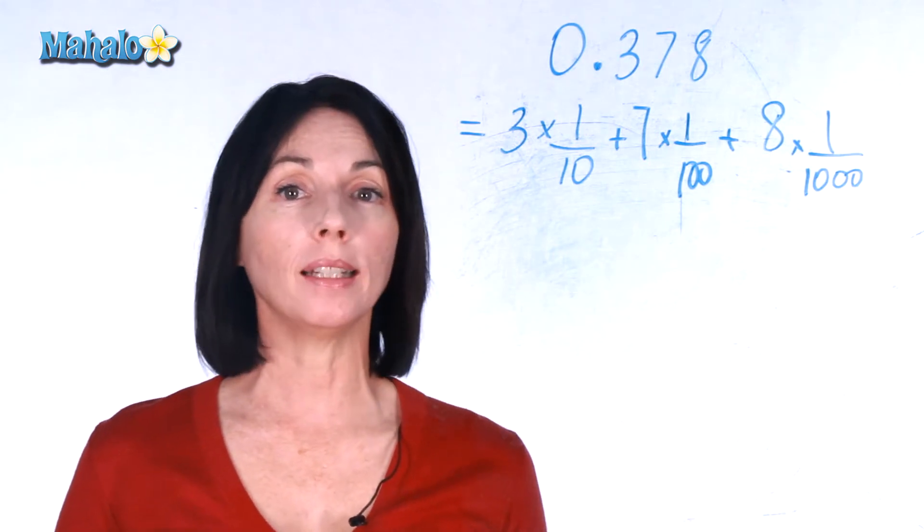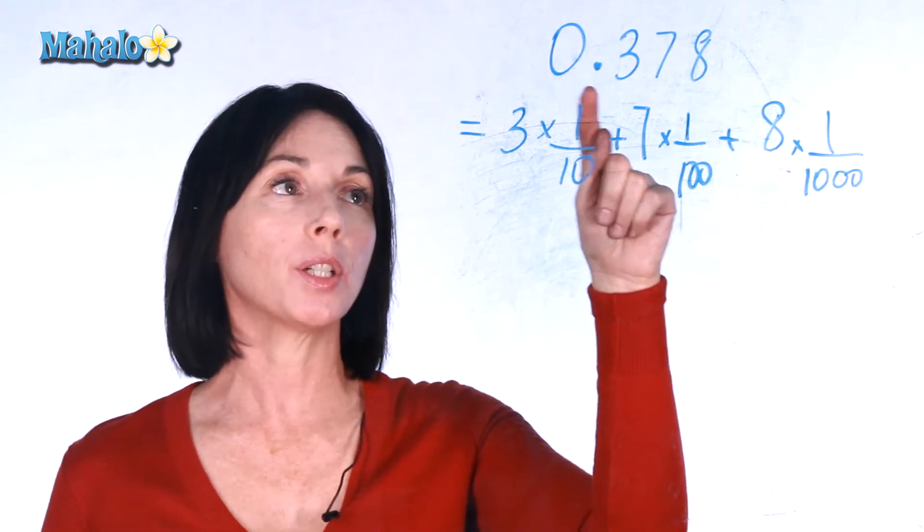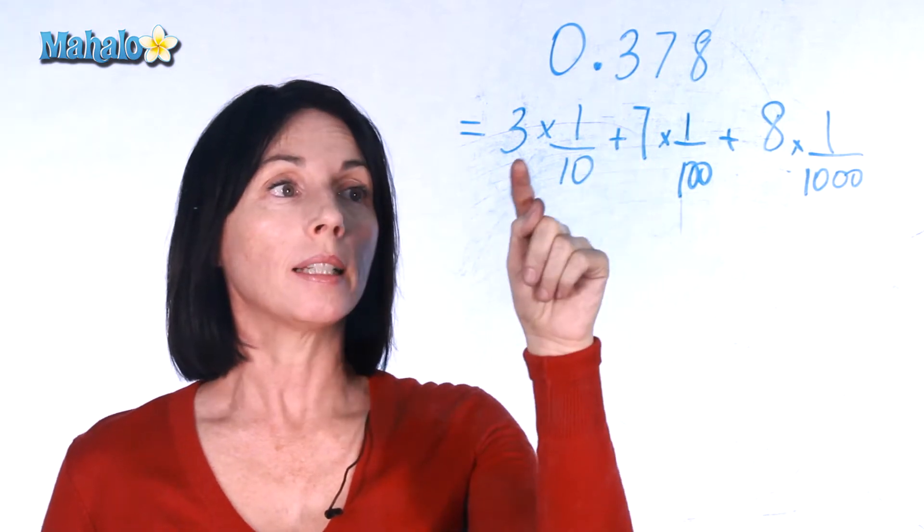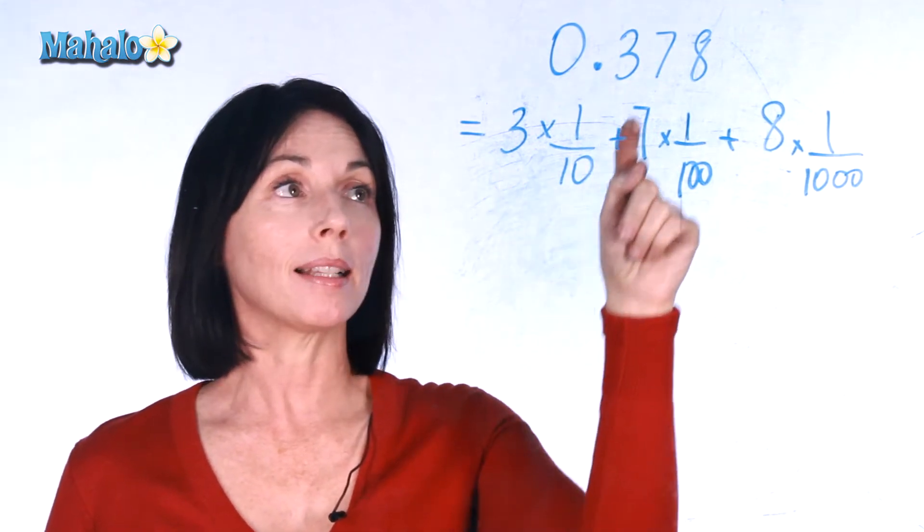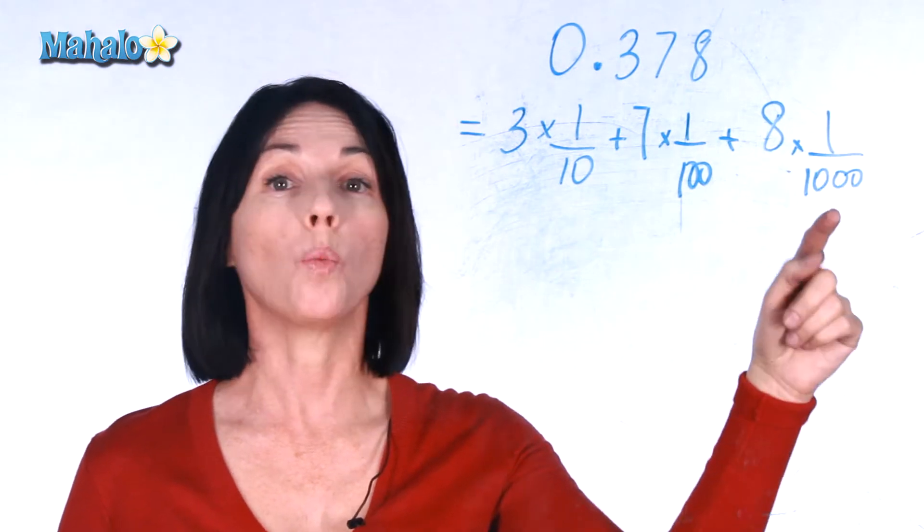So we looked at before writing a decimal in expanded form and it looks like this. Let's say we have 0.378. In expanded form, that's actually equal to 3 times 1 tenth plus 7 times one hundredth plus 8 times one thousandth.